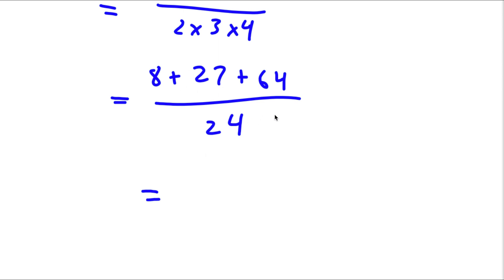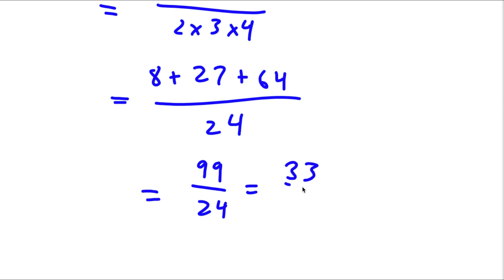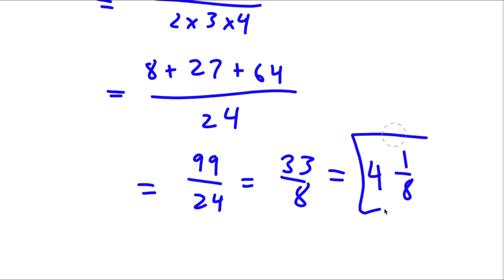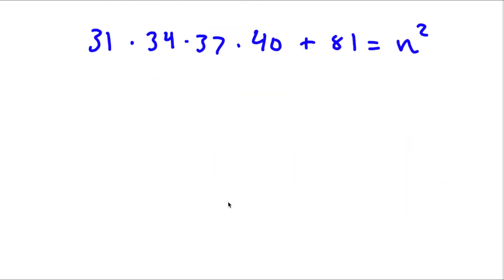8 plus 27 is 35, and 35 plus 64 is 99. So I have 99 over 24, which simplifies to 33 over 8, which is equal to 4 and 1/8. So this is our answer.